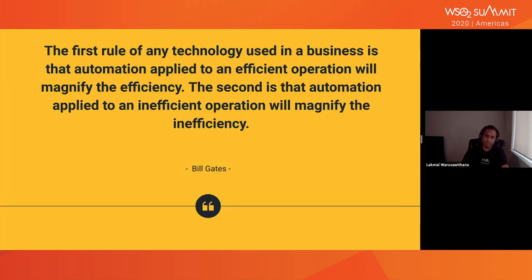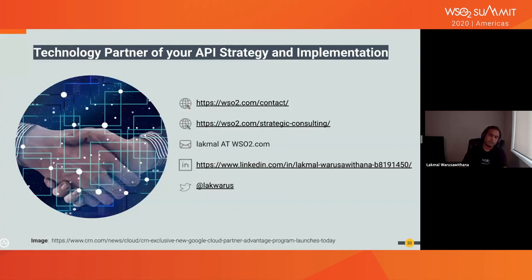I would like to end my presentation with a quote from Bill Gates. What it is saying is that even though automation is very important, if you don't have a proper architecture and processes, you can't achieve the efficiency that you are looking for. As Asanka said in the keynote session yesterday, we can help you with your digital transformation journey. You can fill the Contact Us form and we can reach out to you. If you want to learn more about strategic consultation, please follow the listed link. If you have any questions, you can contact me via Twitter, LinkedIn, or email. Thank you.